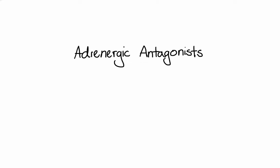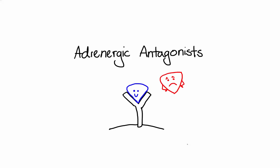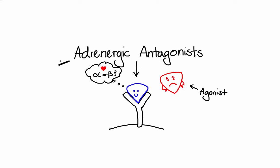In this lecture, I'm going to talk about adrenergic antagonists, also called sympatolytics. They bind to adrenergic receptors, but instead of stimulating them, they actually prevent their activation. Just like with adrenergic agonists, we can divide antagonists based on their affinity for alpha or beta receptors — into two main groups: alpha blockers and beta blockers.